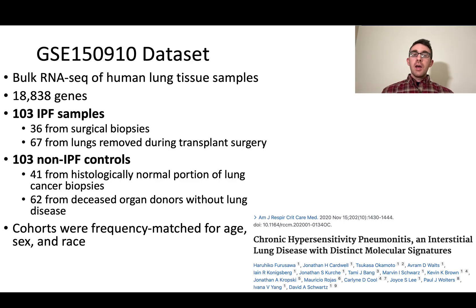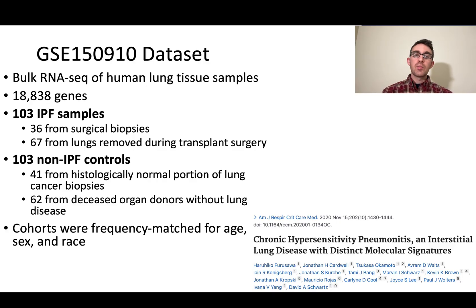They also mentioned in the paper that the cohorts for the two conditions were frequency-matched for age, sex, and race. So they tried to make the IPF and control groups have similar demographics in terms of age, sex, and race, so that we can hopefully compare the groups without worrying too much about confounding factors and other covariates. I invite you to check out the paper and try to read it yourself as good practice.